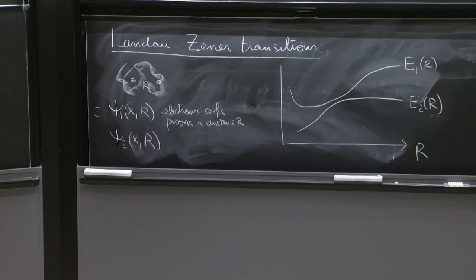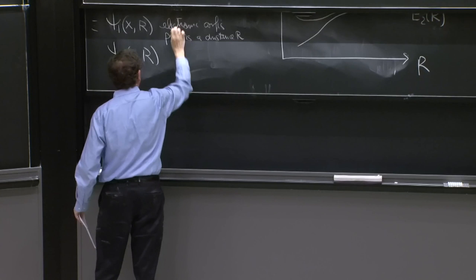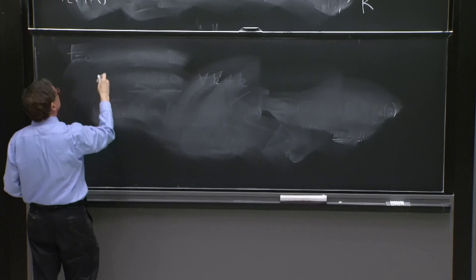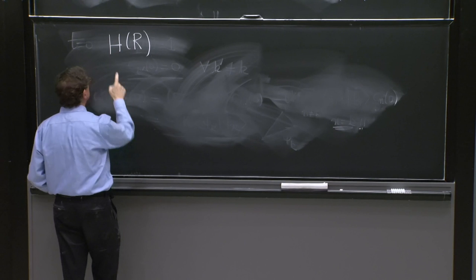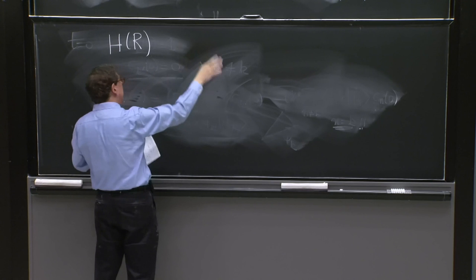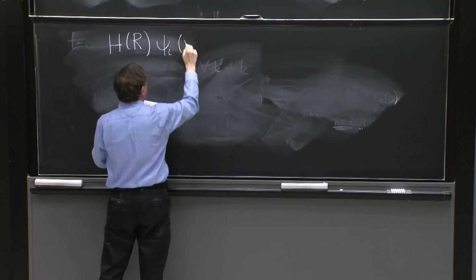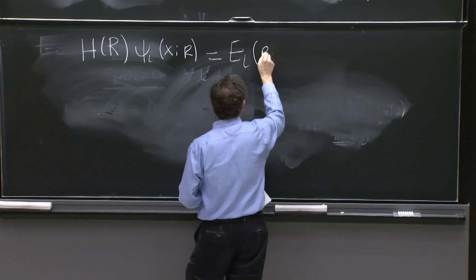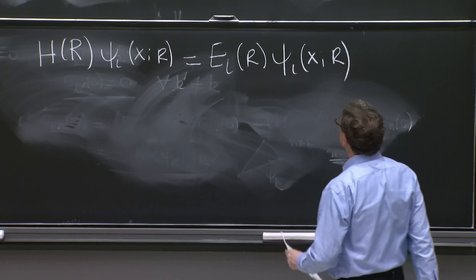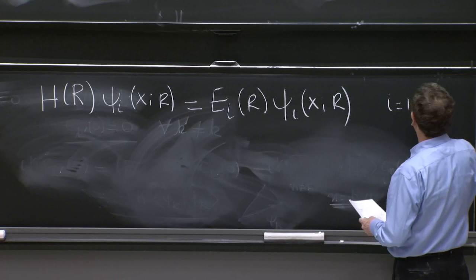And that's a plot of the style that Zener drew in his paper. And this represents E₁ of r and this E₂ of r. That is the energy of the first state, the energy of the second state, as a function of r. So we are having here two energy eigenstates.